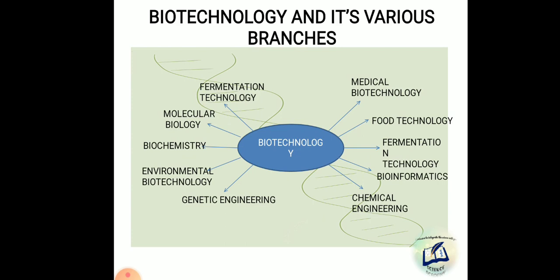Now the various branches of biotechnology: biotechnology has many branches. As you can see in this slide, the branches include chemical engineering, bioinformatics, fermentation technology, food technology, medical biotechnology, molecular biology, biochemistry, environmental biotechnology, and genetic engineering. These are the various branches of biotechnology.